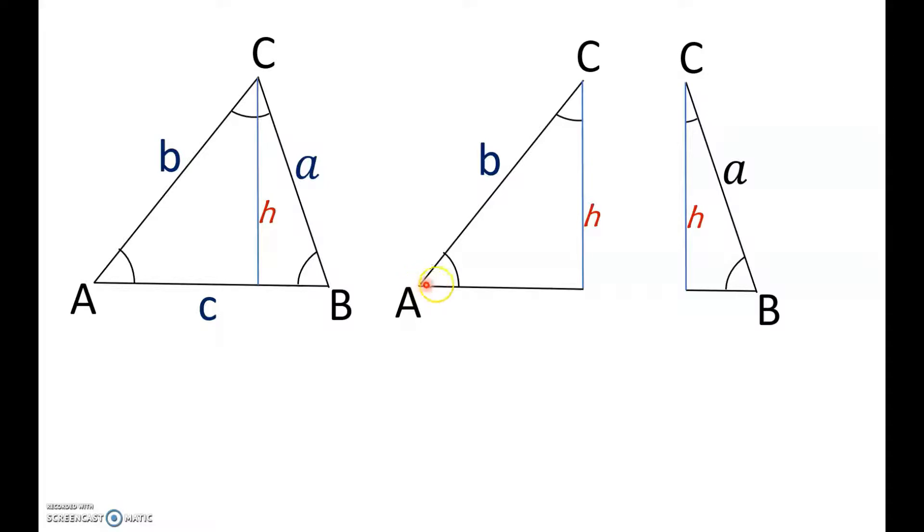If A is our theta, then sine of A would be the angle here. A would refer to the angle that's here. So, sine A would be equal to opposite side by hypotenuse. That's H over B. Let's bring that here.